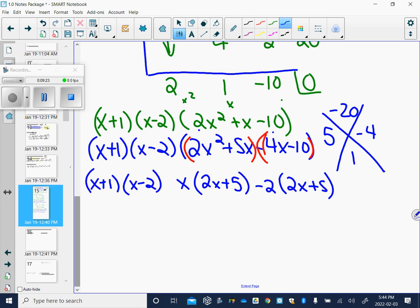Finally, combining this all together, x plus 1, x minus 2, x minus 2, that's where that came from, and 2x plus 5.